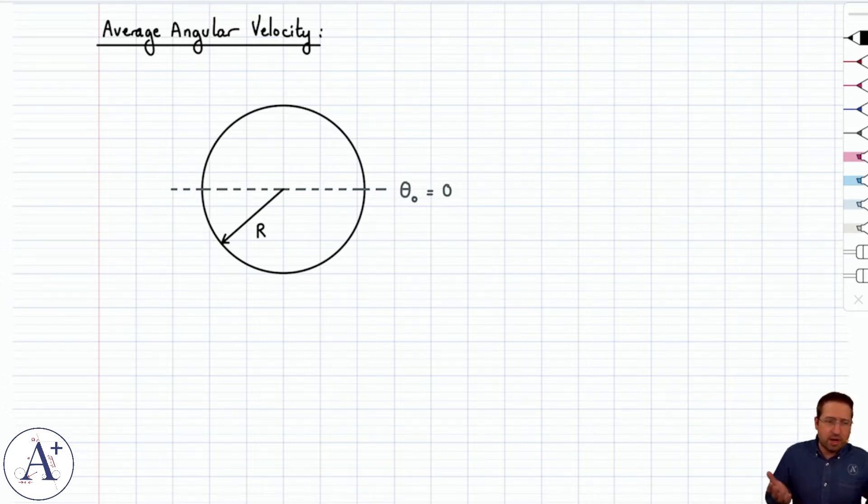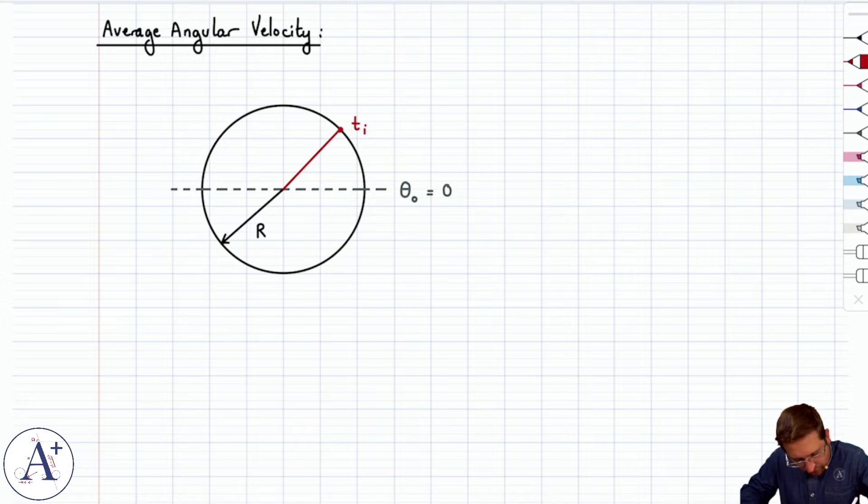It basically tells you how quickly you undergo a certain angular displacement. So let's illustrate this by drawing a particle here at time t initial, and then let's say it's going counterclockwise like this. This is time t final, and of course that means that the angular displacement is delta theta right here.